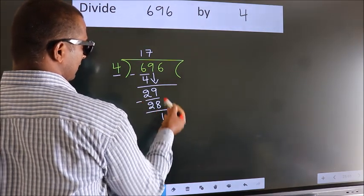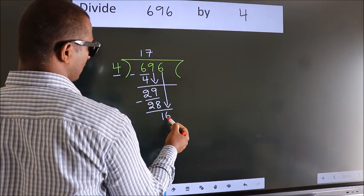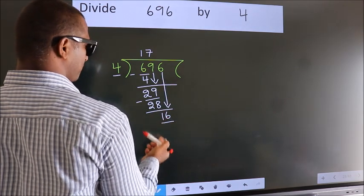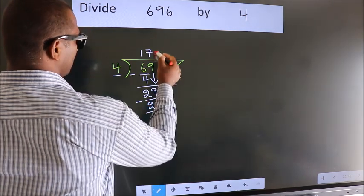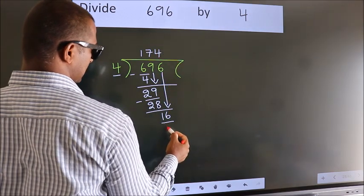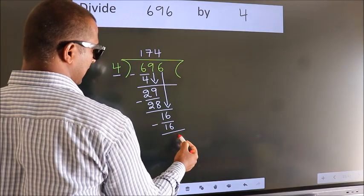After this, bring down the beside number. So, 6 down. So, 16. When do we get 16 in the 4 table? 4 times 4 is 16. Now we subtract. We get 0.